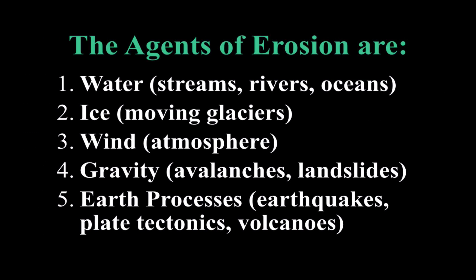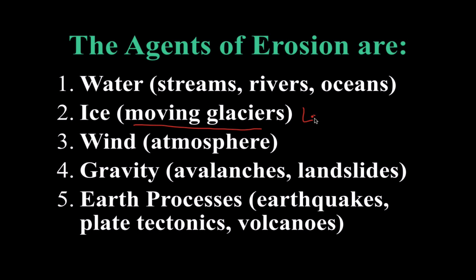There are major agents of erosion. Water is probably the strongest agent of erosion on our planet — so streams, rivers, oceans are the biggest agents of erosion. Ice, or moving glaciers, is another very important one. This actually helped to shape Long Island to its present form, so this is definitely one that is relevant for us here on Long Island.